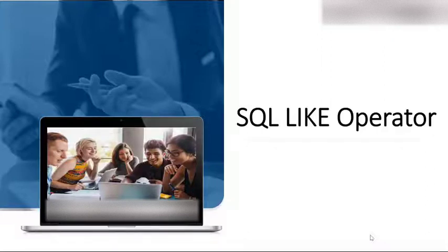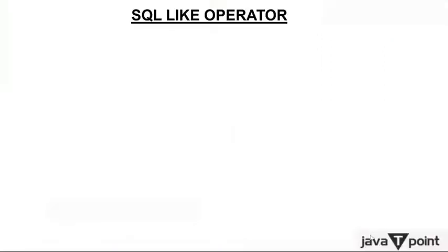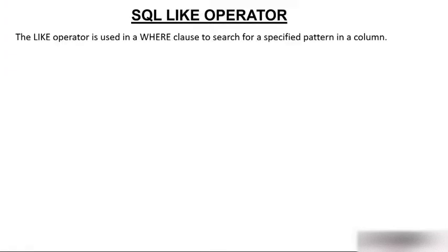The LIKE operator is used in our WHERE clause to search for a specific pattern in a column. If you want to search for a specific pattern, you use the LIKE keyword.